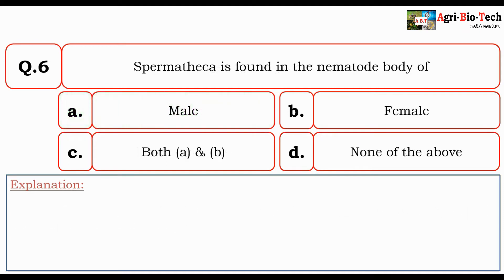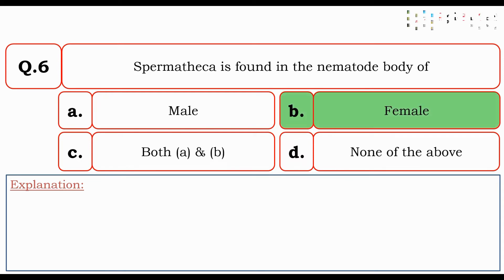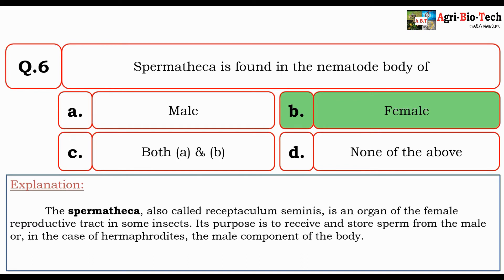Next question: Spermatheca is found in the nematode body of — male, female, both A and B, or none of the above? The correct answer is female. The Spermatheca, also called Receptaculum seminis, is an organ of the female reproductive tract in some insects. Its purpose is to receive and store sperm from the male, or in the case of hermaphrodites, the male component of the body.